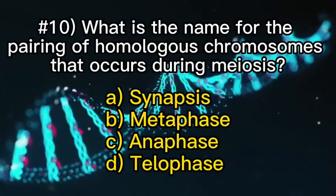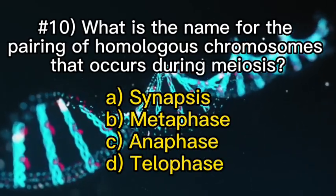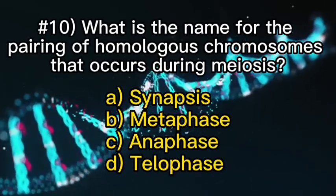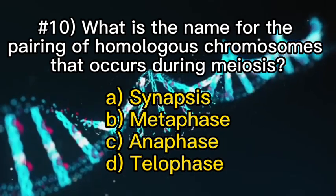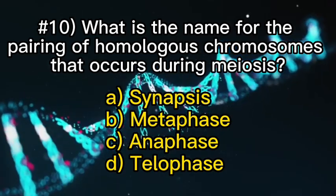Number ten: what is the name for the pairing of homologous chromosomes that occurs during meiosis?